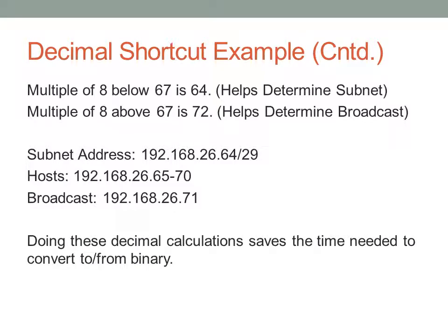This is a lot easier than converting 67 into binary, setting host bits to zero, converting back to get 64, then setting all host bits to one and converting back to get 71. It's much faster to just use these multiples — these magic numbers.